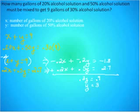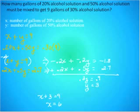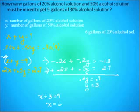Now I'll use y equals 3 to find x. Using the top equation x plus y equals 9: x plus 3 equals 9, subtract 3 from both sides, and x equals 6. The 6 represents the gallons of 20% alcohol solution. So the final answers are 6 gallons of 20% alcohol solution and 3 gallons of 50% alcohol solution.